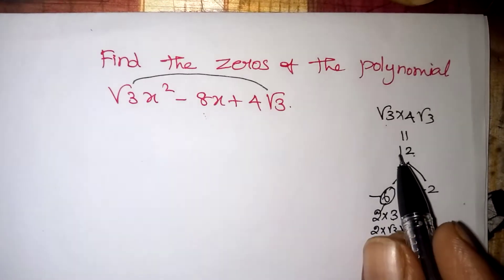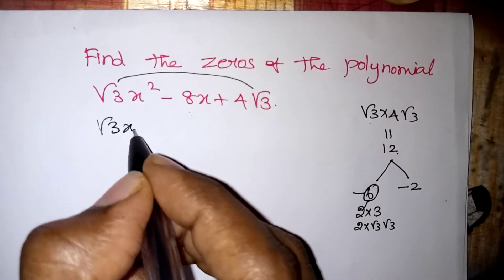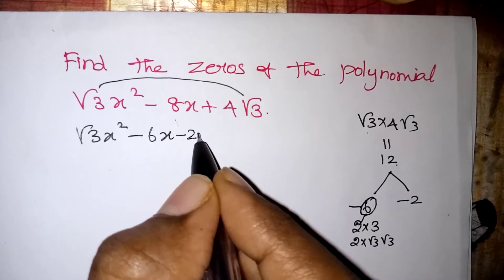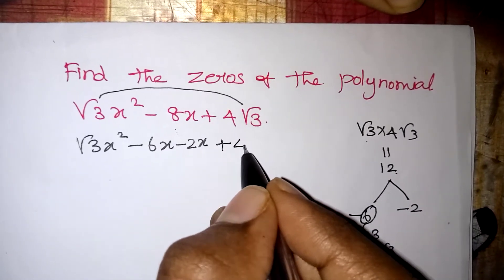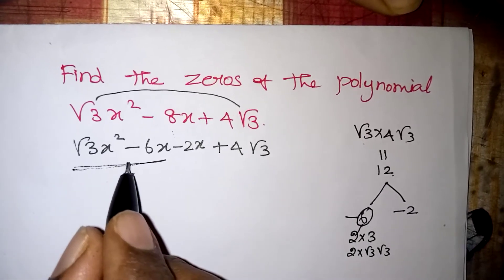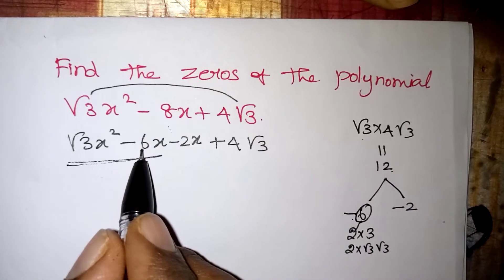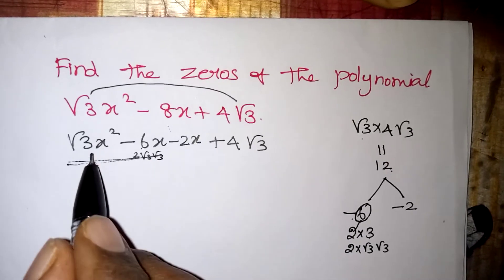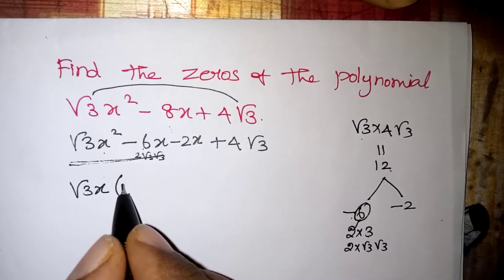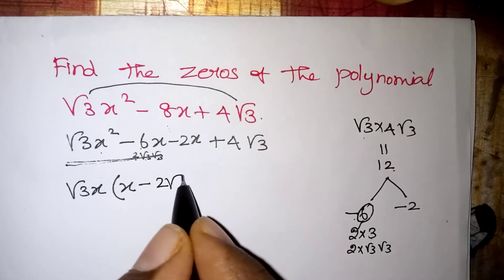So minus 8x becomes minus 6x minus 2x. We keep the first and last terms as they are. Now we have 4 terms. From the first two terms, 6 can be written as 2·root 3·root 3, so root 3·x is common. Take root 3·x outside — the remaining terms from those two are x and minus 2·root 3.